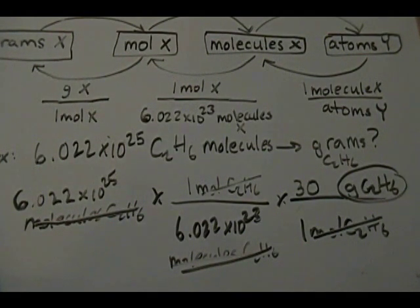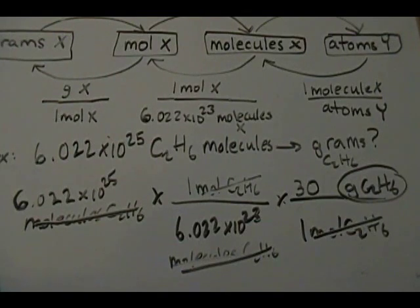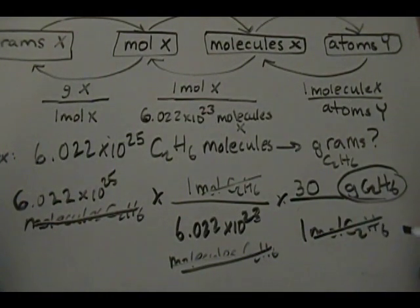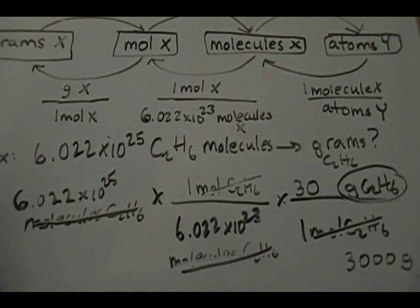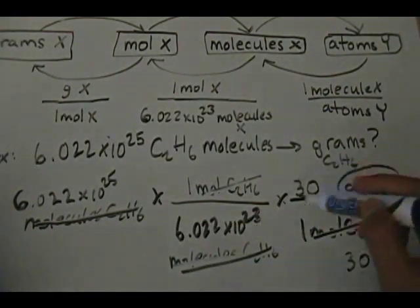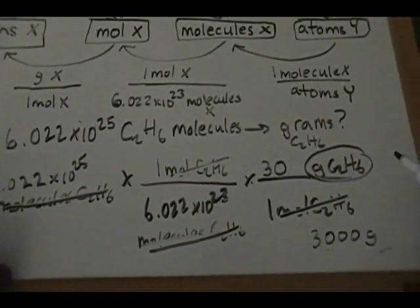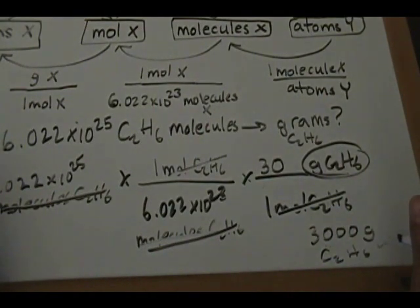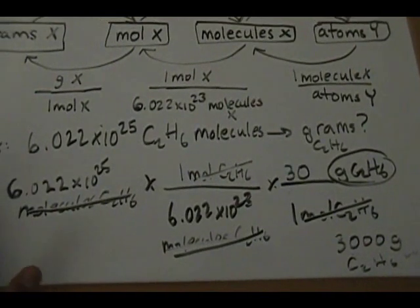Put parentheses in your calculator: 6.022 times 10 to the 25th, divided by 6.022 times 10 to the 23rd, equals 100. Then times 30, I got 3,000. So our answer is 3,000 grams of C₂H₆. If we have that many molecules of ethane, it'll come out to weigh 3,000 grams if you put it on a balance.